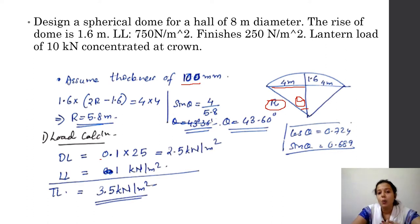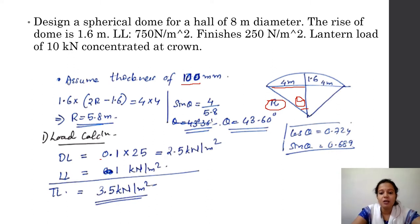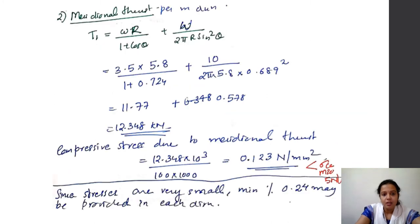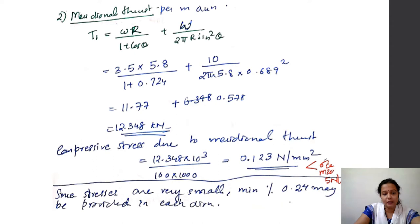For this type of design we use the working stress method, not the limit state method. Therefore we need not multiply by the factor 1.5. Now we use the equation for calculating the meridional thrust.